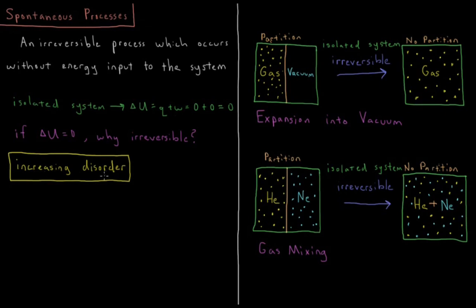And the answer to that is that there's an increasing disorder. There's far more ways to arrange the gas spread all throughout the entire container than the gas partitioned into half of it. There's far more ways to arrange helium and neon particles such that they're intermixed with one another, than there are ways to arrange them such that they're segregated onto one side or the other.